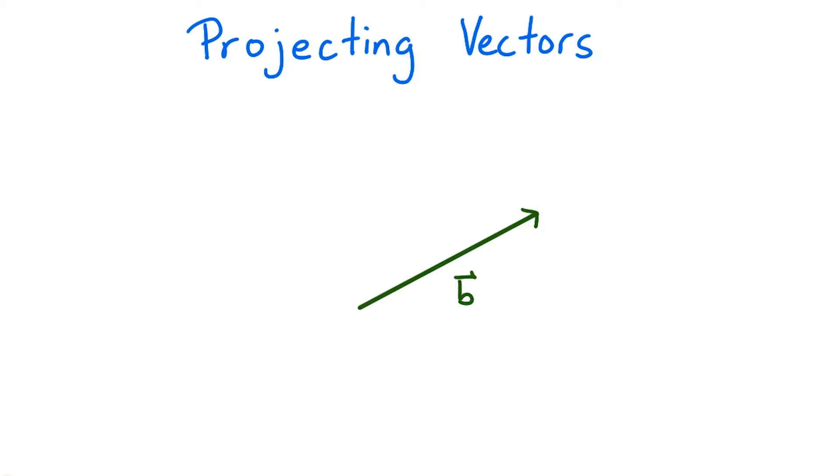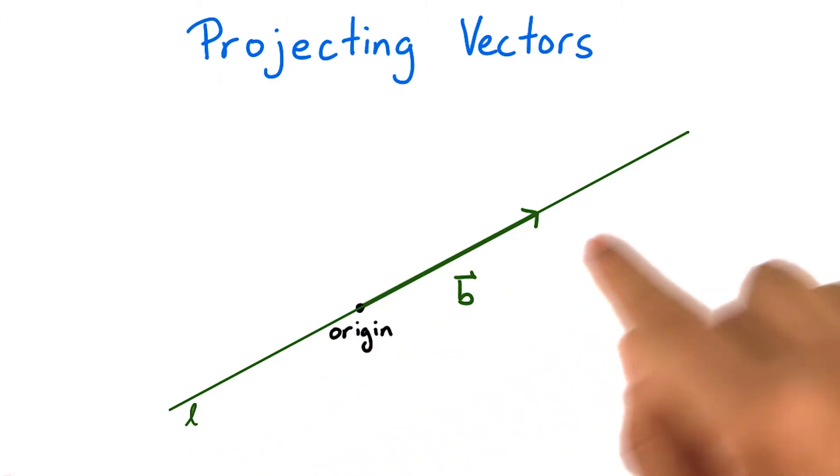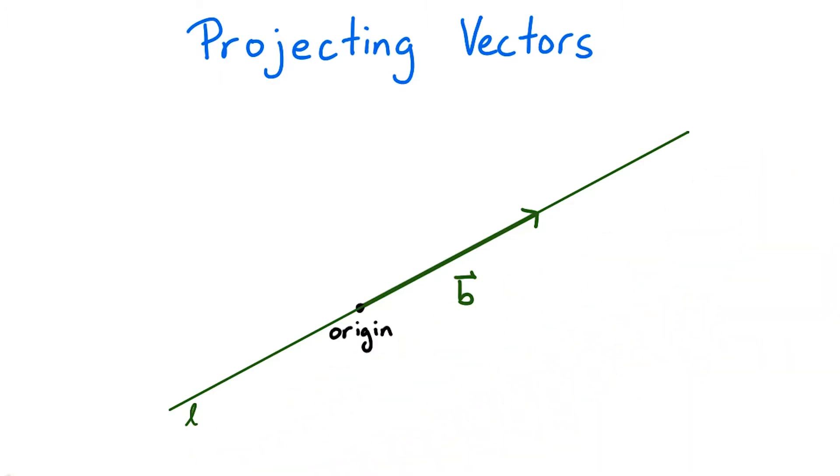For this video, let b be a constant vector, where you can think of the b as standing for the word basis. It will be useful to think of b as emanating from the origin, and then to imagine a line l through the origin that contains the arrow representing b.